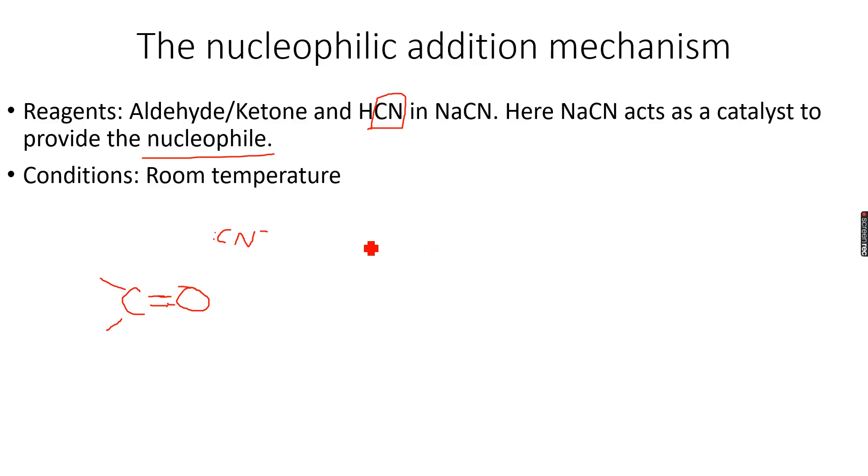We have seen negative ions which are the nitrile ions, and this carbon atom has a lone pair of electrons, so it can give away its lone pair of electrons.